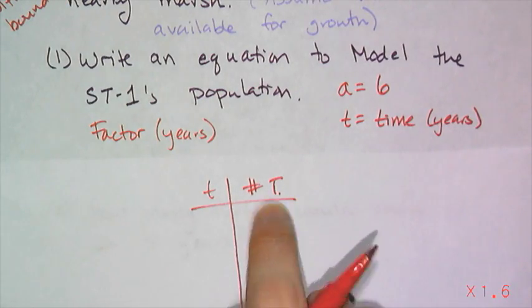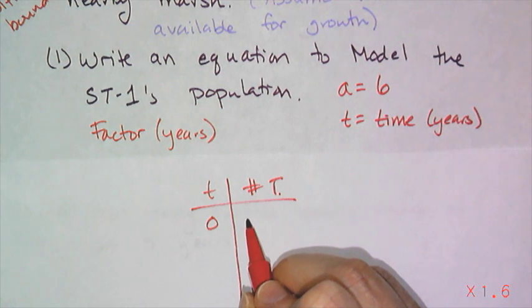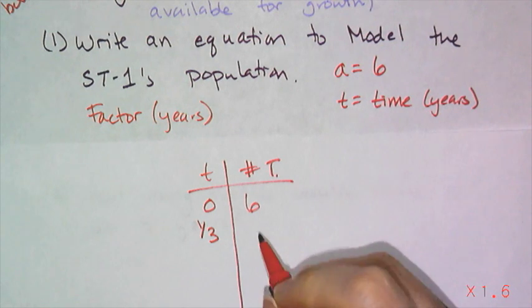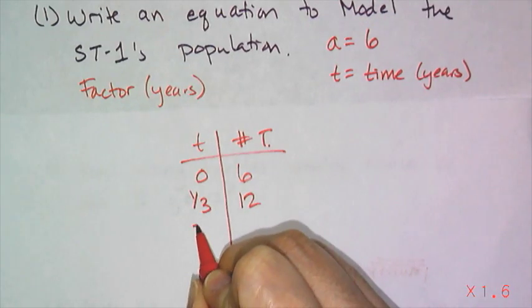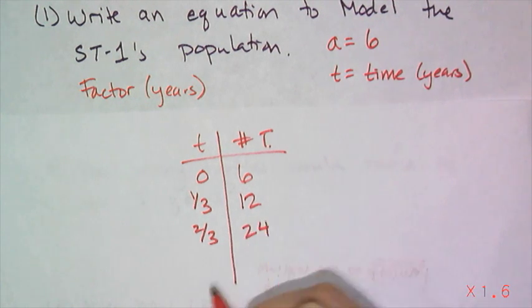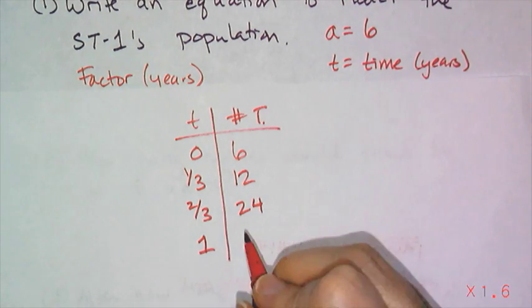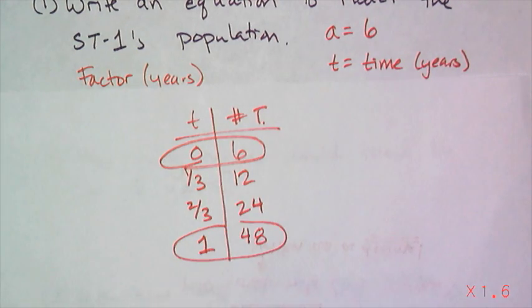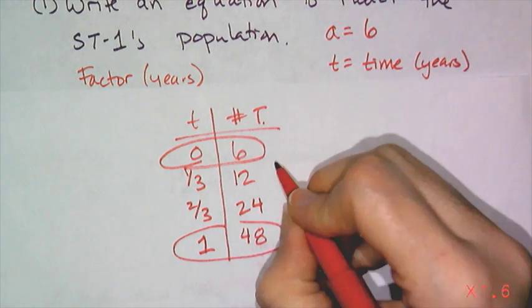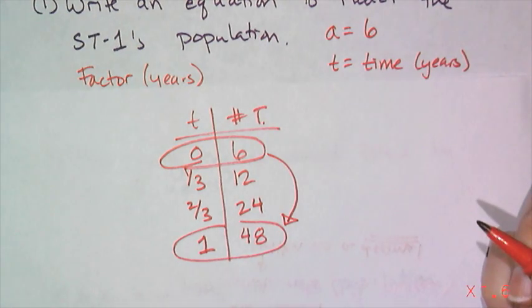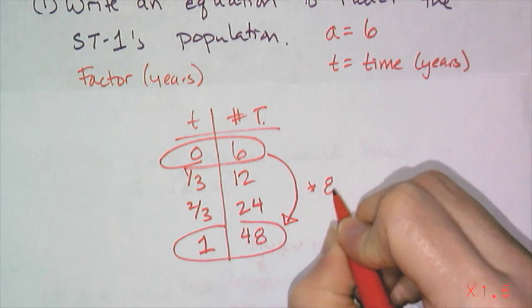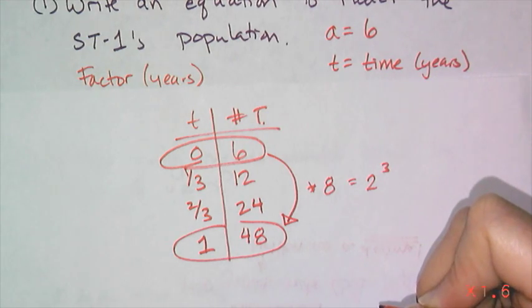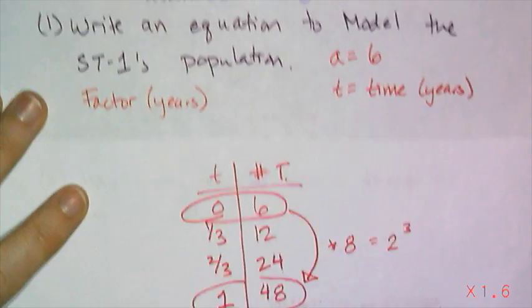So T is time in years. This is the number of turtles. At year zero, I have six turtles that have been created and unleashed upon the world. And then in one-third of a year, that population doubles to 12. In two-thirds of a year, that population doubles to 24. And then in a single year, that population then doubles again to become 48. So the numbers I'm interested in are these two. So if I want to find my factor in years, I have to think, well, what did I have to multiply 6 by to get 48? And that's a multiplication by 8, because I doubled 3 times, or multiplied by 2 three times or raised it to the third power. So my factor in years is 8.